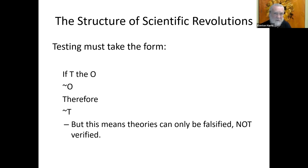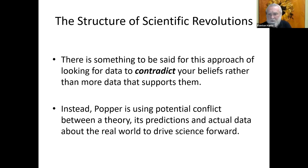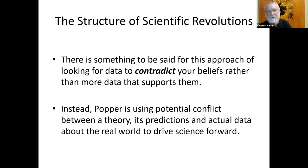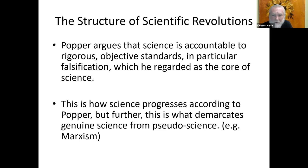If a theory resists falsification time and time again, it starts to grow in credence and we begin to accept it more broadly — nevertheless, it's not confirmed. The process can only be attempts at disconfirmation or falsification. There is something to be said for looking for data to contradict your beliefs rather than data that supports them. Popper uses potential conflict between a theory's predictions and actual data to drive science forward. He argues science is accountable to rigorous objective standards, in particular falsification, which he regards as the core of science.